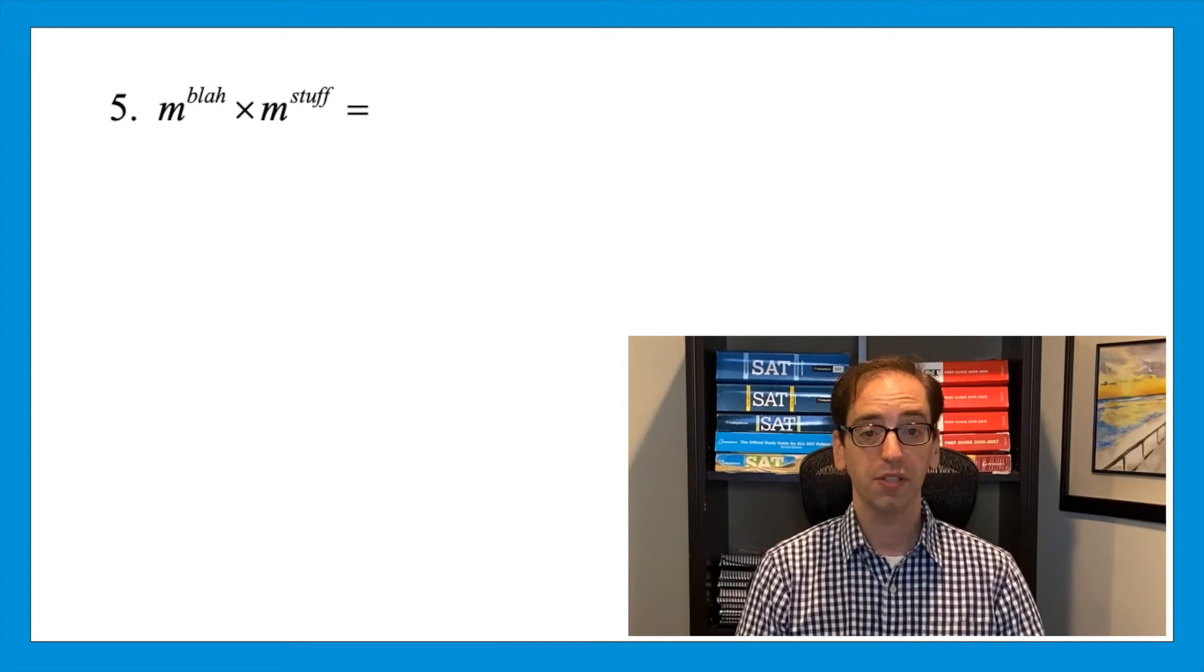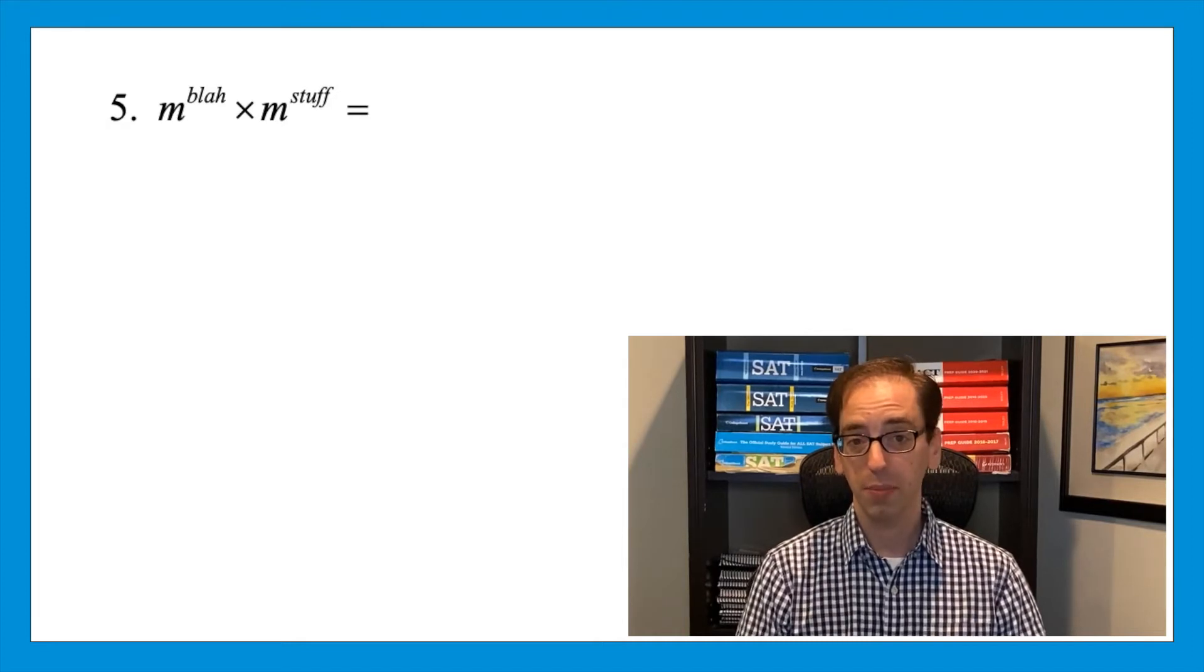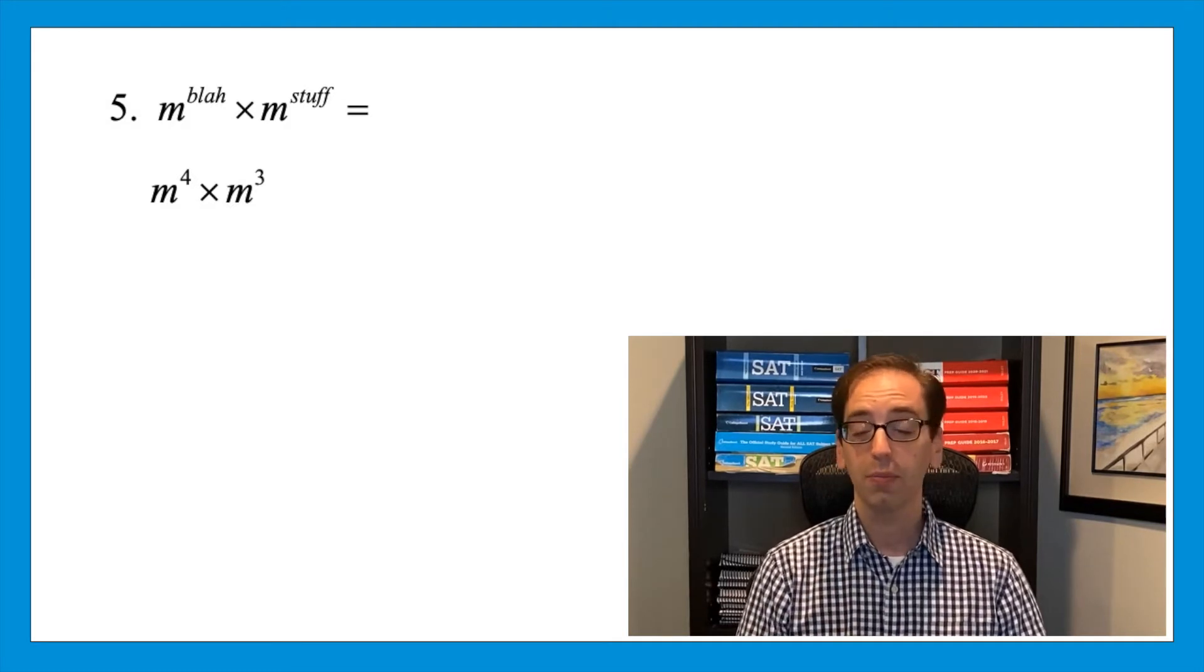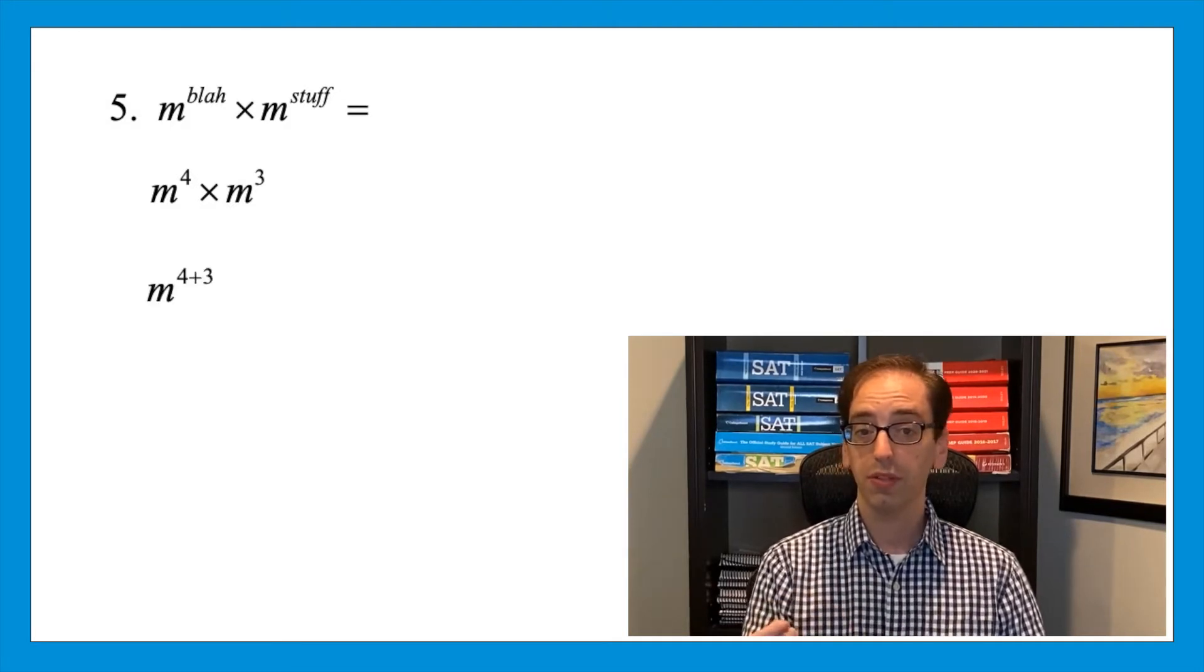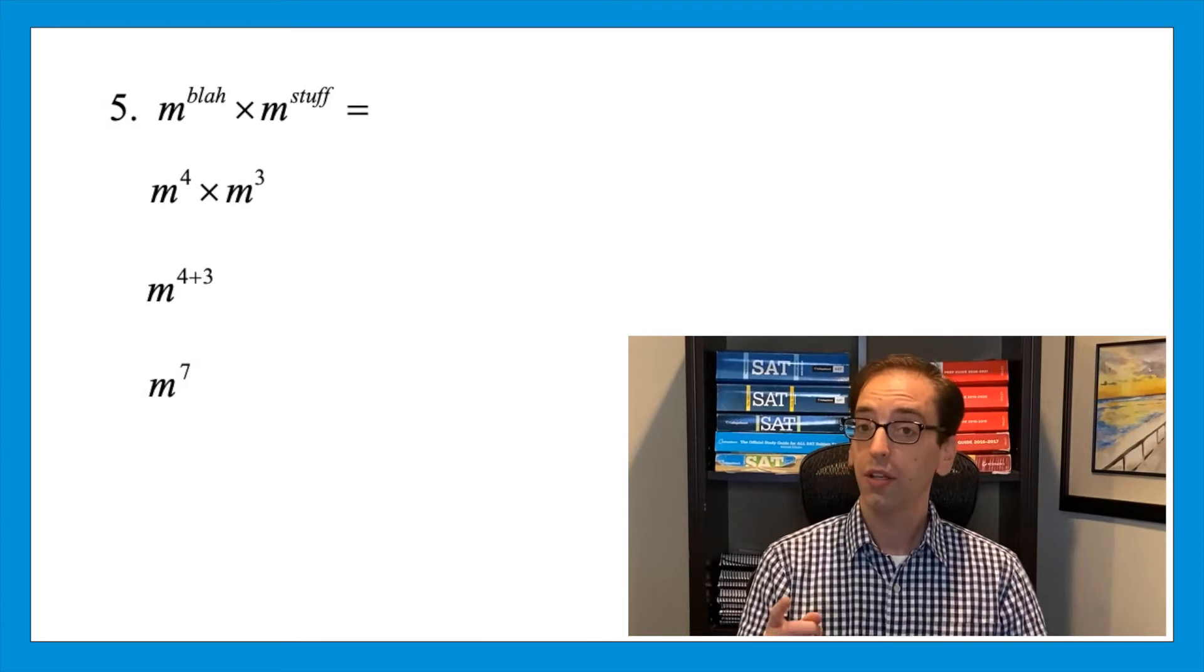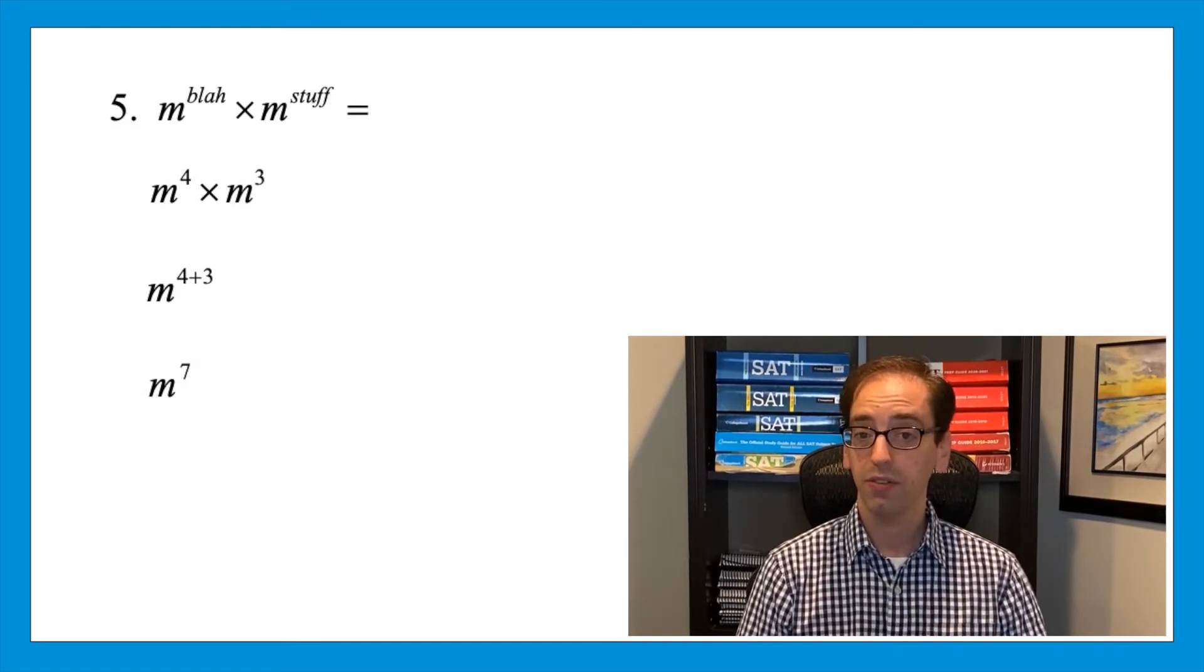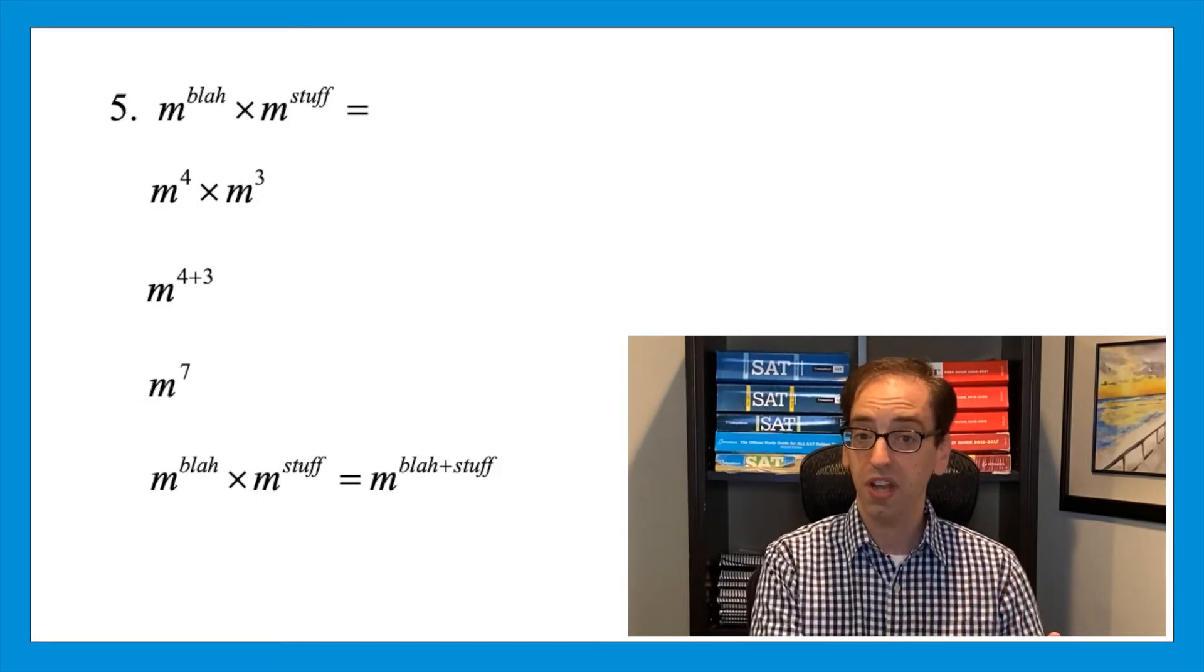Let's see how the same principle is involved with multiplying bases. m to the blah times m to the stuff. Let's pick some easy numbers. Instead of blah and stuff, let's say that we're dealing with m to the 4th times m to the 3rd. What would you do? Multiplying bases means you add the powers. So that would become m to the power of 4 plus 3 or m to the 7. Using that, let's go back to the question. m to the blah times m to the stuff becomes m to the power of blah plus stuff.